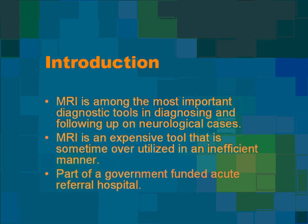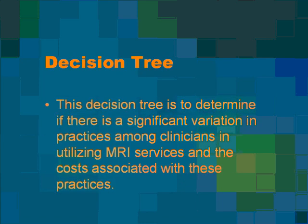The MRI department in question is part of a government-funded acute referral hospital. The decision tree is used to determine if there is a significant variation in practices among clinicians in utilizing MRI services and the costs associated with these practices. The decision tree will compare the practices between two neurologists and their referral of patients to the MRI department for an MRI of the brain, which is a very common MRI examination.